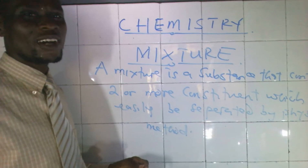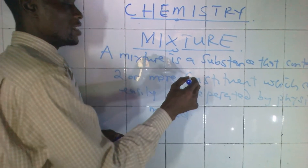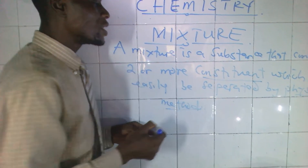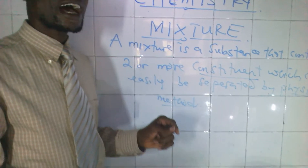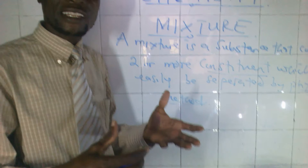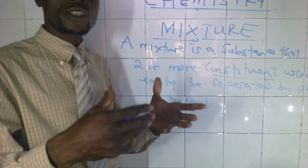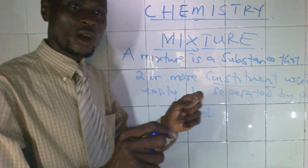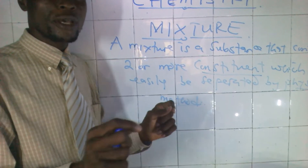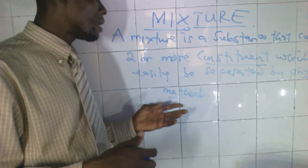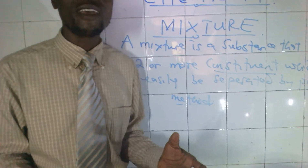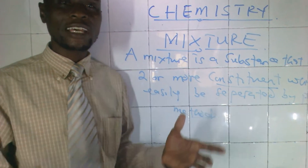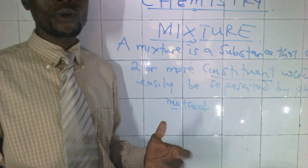Let us pinpoint some things here under this mixture: constituents and physical method. The constituents are the materials — the substances that are inside a mixture. They are the ones that can be separated by physical method. Examples of a physical method include filtration, evaporation, and fractional distillation, and so on.